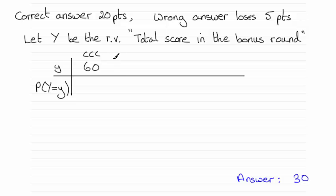It might be that you end up getting say just two questions correct so you could have two questions correct and the third one wrong. So that'd be a total of 20 points another 20 points subtract 5 points so that's going to come down to 35 points, 20 plus 20 minus 5.